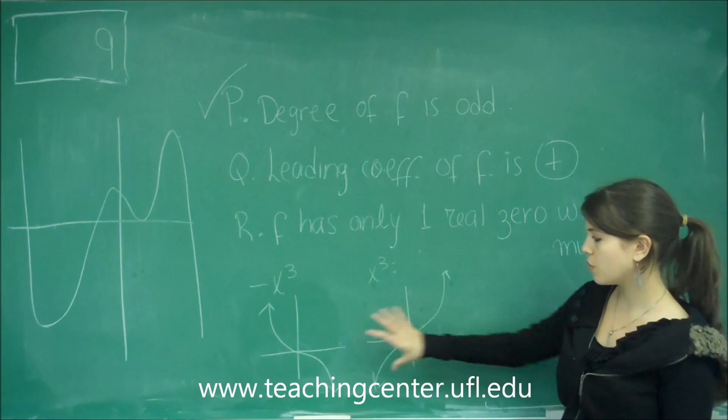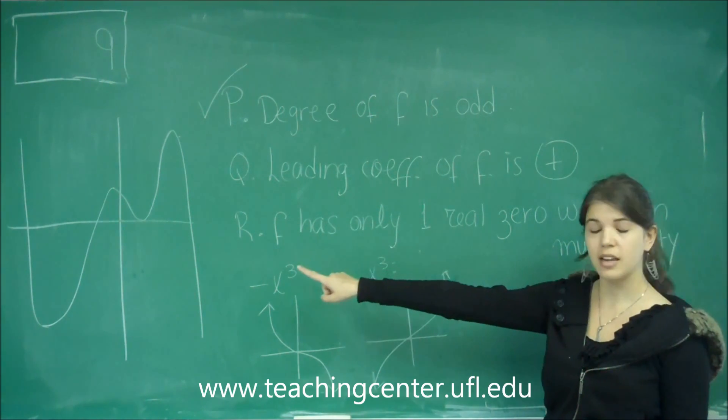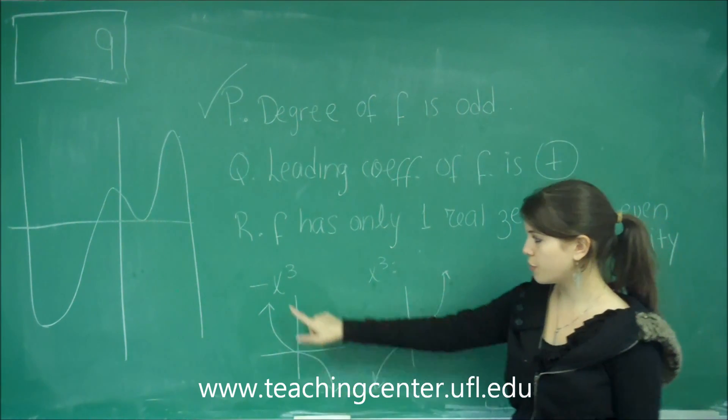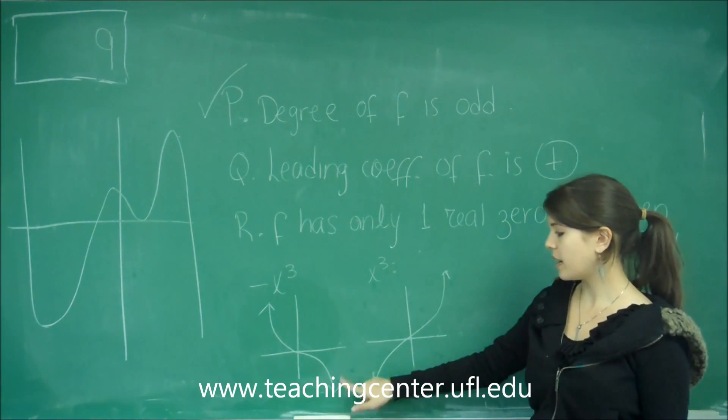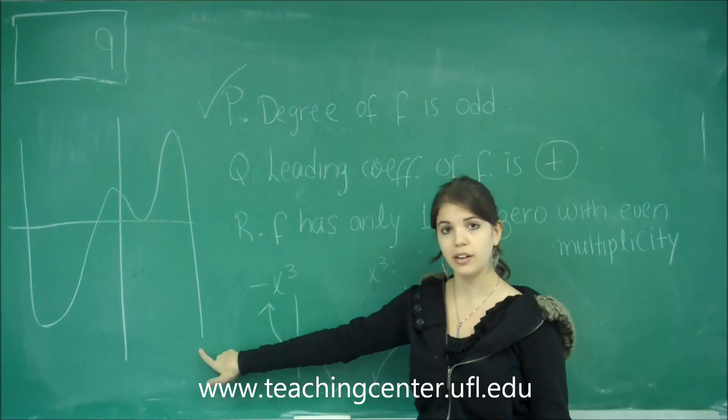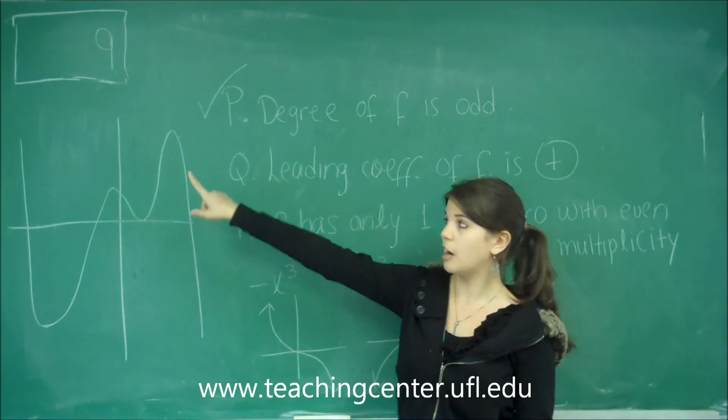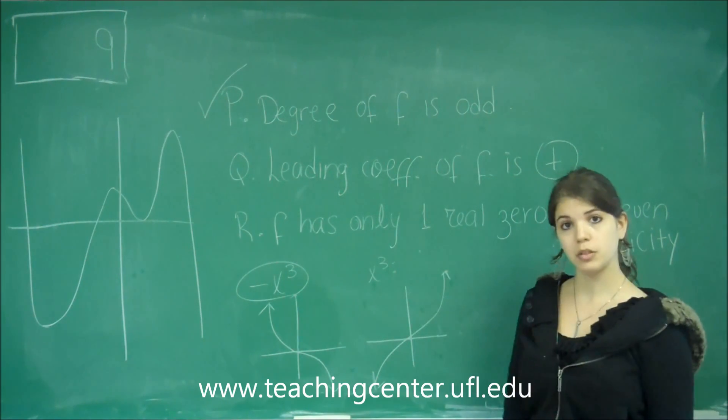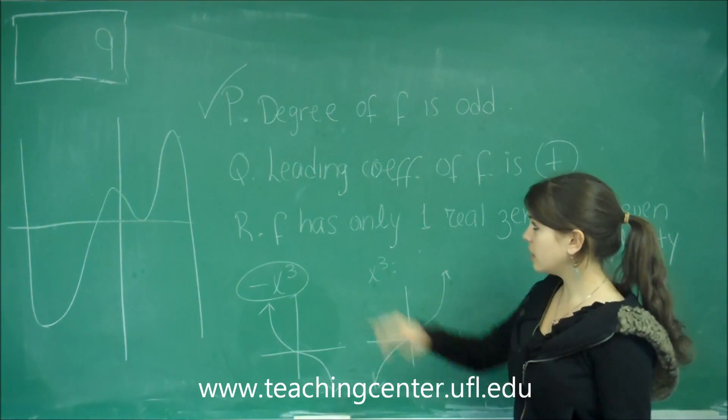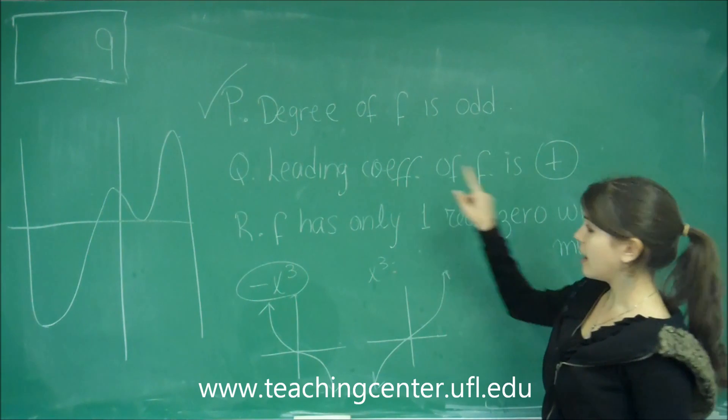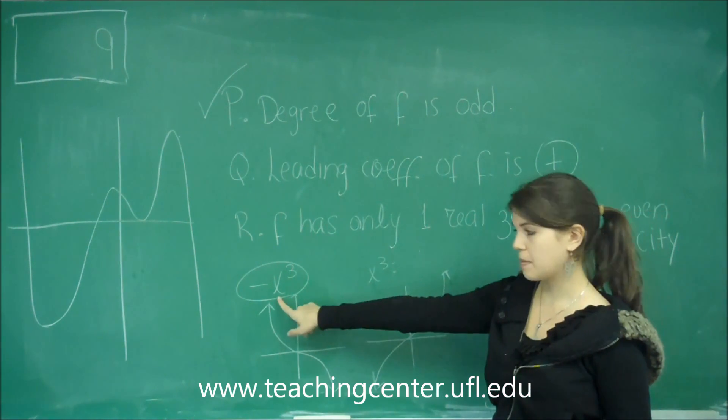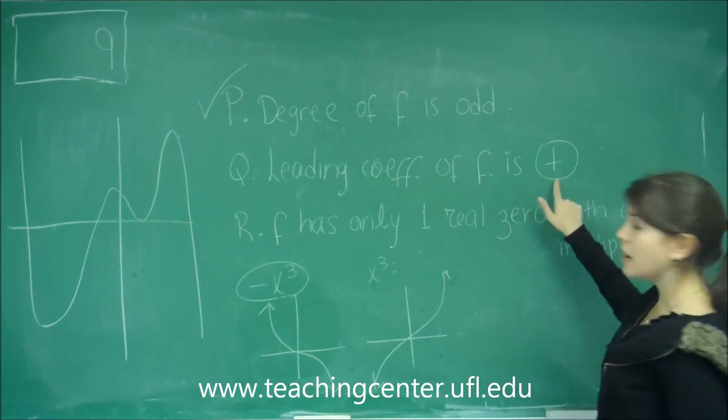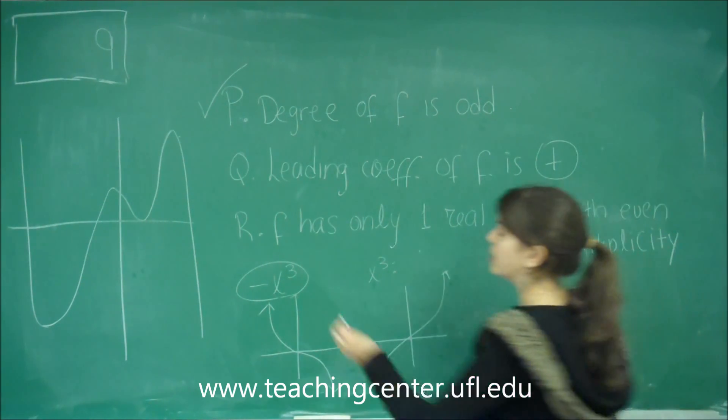Let's compare these two graphs to the graph we have and determine which ends are the same. For the negative x cubed, the right end is going down, just like here. And the left end is going up, just like there. So, that graph is mostly like the negative x cubed. That means that the leading coefficient of f should be the same as the leading coefficient of this guy, which is negative. So, it's not positive, it's negative. That is incorrect.